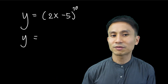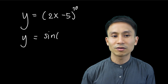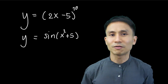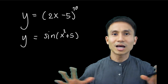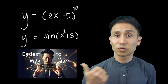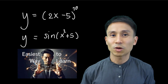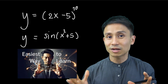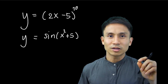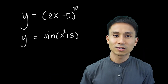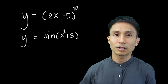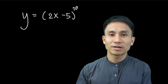Or you could have a function like sine of (x²+5). This particular form is not in the standard differentiation formulae. You cannot use any standard formula directly. So the question is: how would you differentiate these two functions? Of course, we need the chain rule.